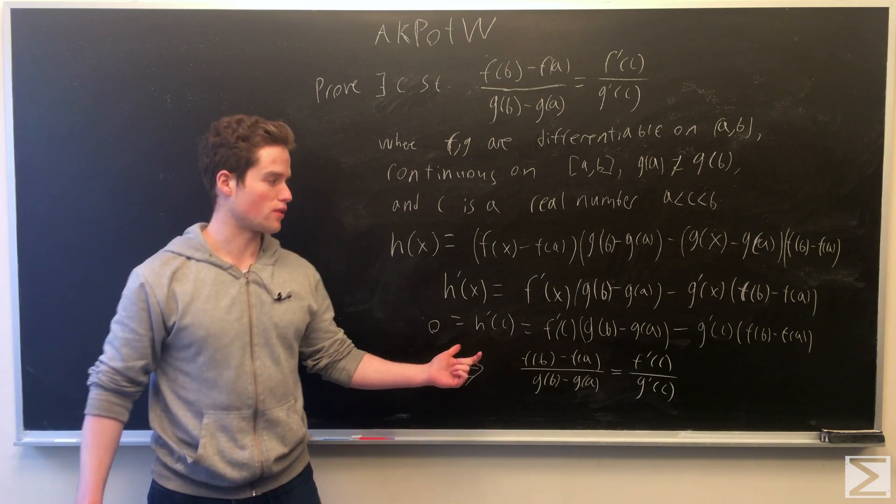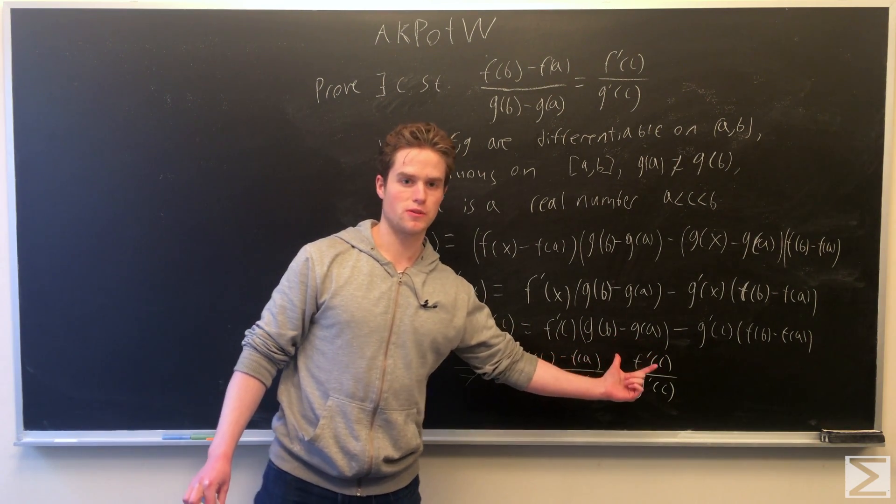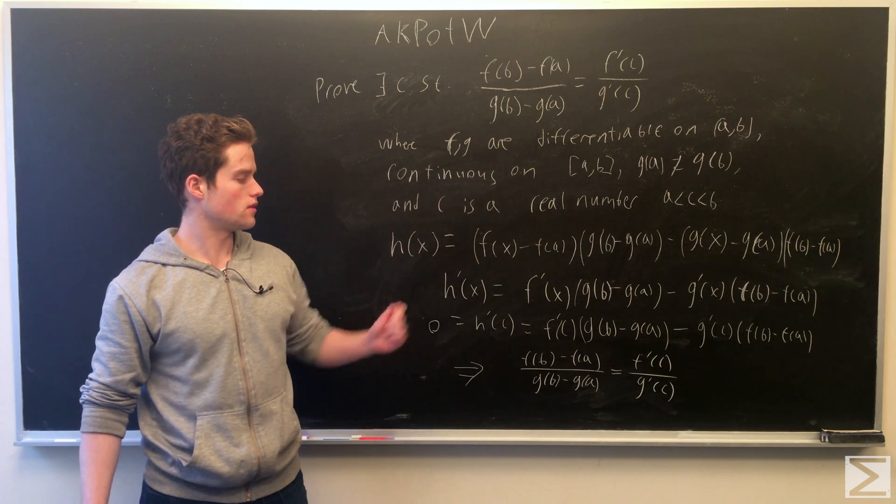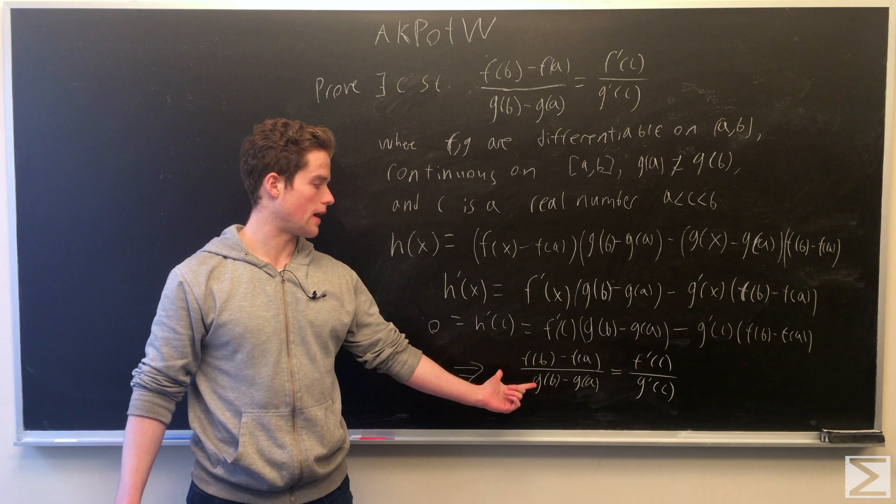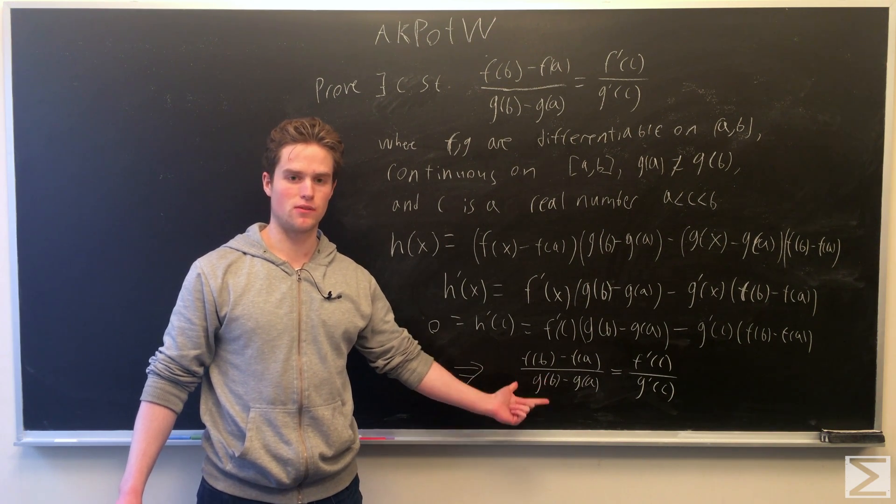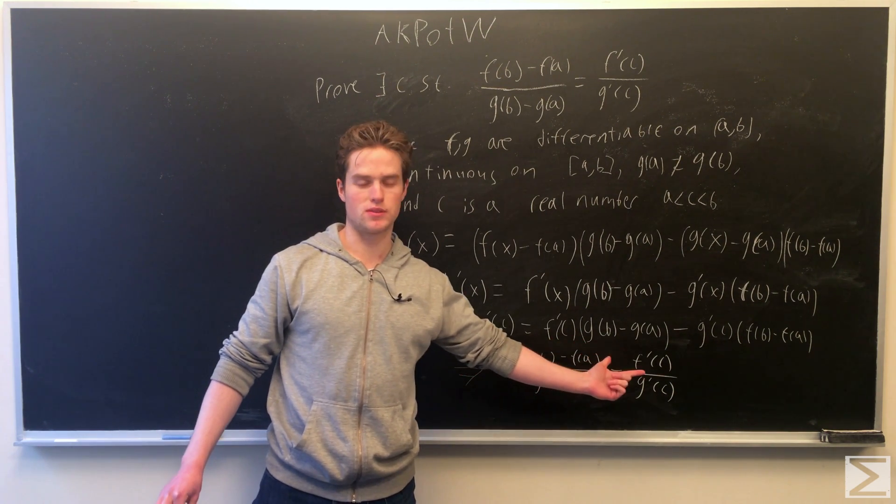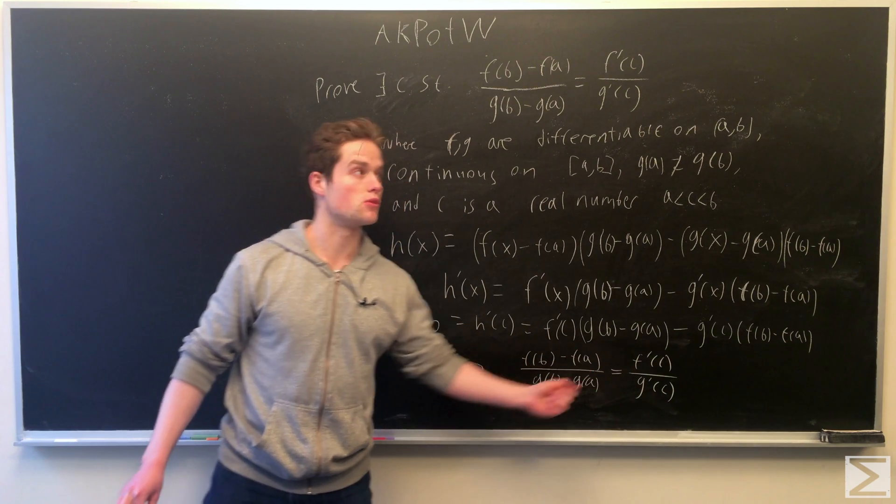Rearranging this a little bit, knowing that g of b minus g of a does not equal 0 due to our initial condition, we arrive at our final result: f of b minus f of a over g of b minus g of a equals f prime of c over g prime of c for some c between a and b.